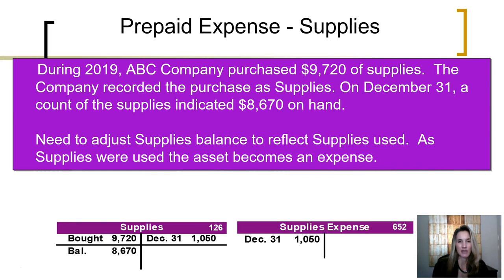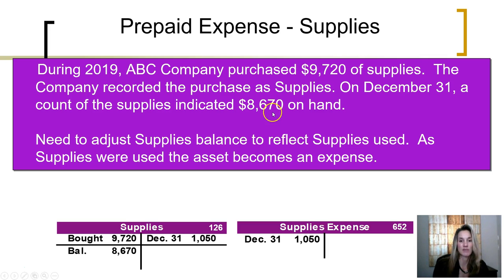The best way to see how this adjustment works is to look at a few examples. During 2019, ABC Company purchased $9,720 of supplies. The company recorded the purchase as supplies. On December 31st, a count of the supplies indicated that $8,670 are currently on hand. Because the company purchased $9,720 of this asset during the year, and at the end of the year they only have $8,670 on hand, the difference between the supplies purchased and the supplies on hand at the end of the accounting period were used up.